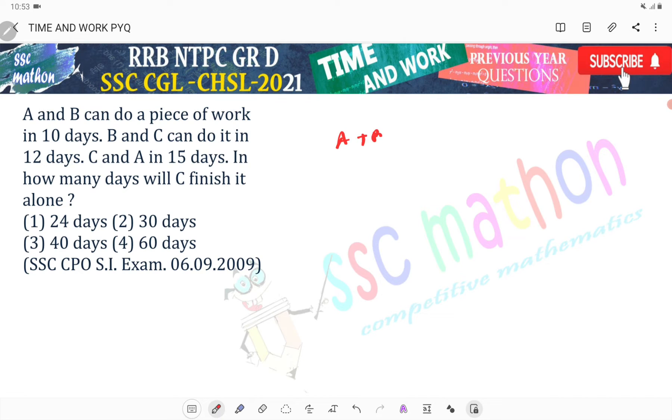A plus B in 10 days. B plus C in 12 days. C plus A in 15 days. Now look, the LCM is 60. So total number of work days, work days equals to 60. 60 units of work.